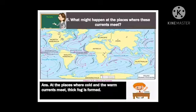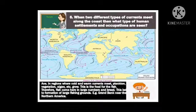Fifth question: What might happen at the place where these currents meet? Answer: At the places where cold and warm currents meet, thick fog is formed. Sixth question: When two different types of currents meet along the coast, what type of human settlements and occupations are seen? Answer: In regions where cold and warm currents meet, plankton, vegetation, algae, etc. grow. This is food for the fish. Therefore, fish come here in large numbers and breed, leading to the formation of large fishing grounds. Example: Grand Bank near northern America.